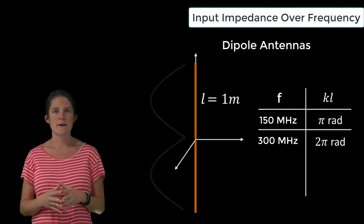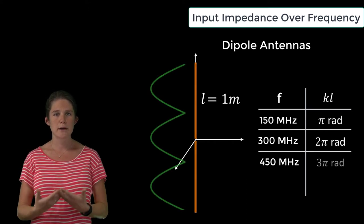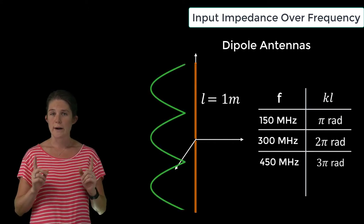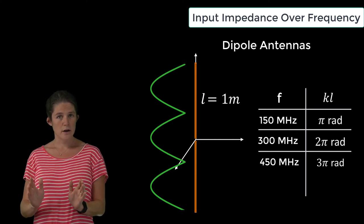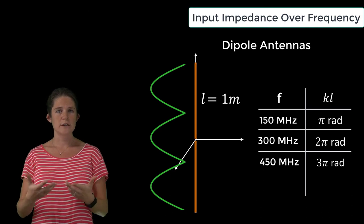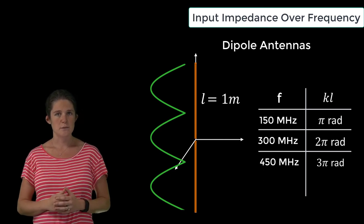Or, if it is driven at 450 megahertz, it will have an electrical length of 3π radians, or one and a half wavelengths. So, the physical length of the antenna is constant, but its properties change with frequency because its electrical length changes with frequency.